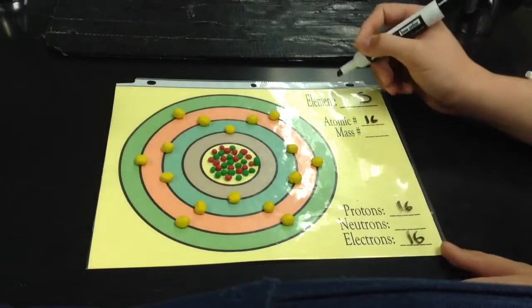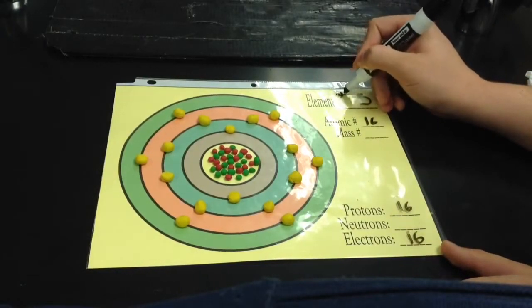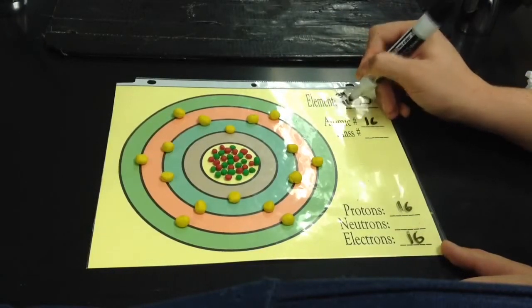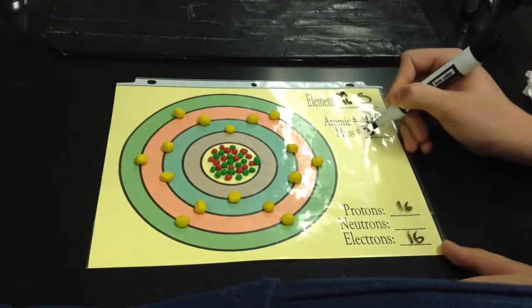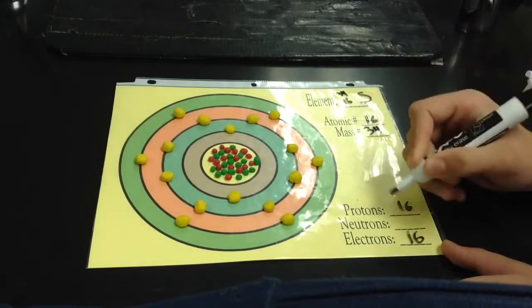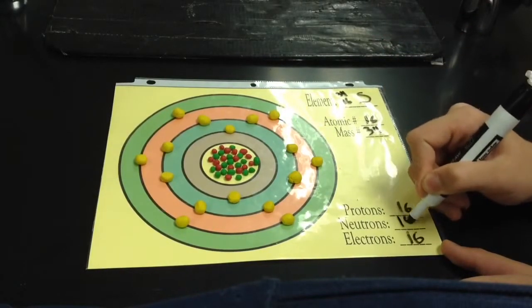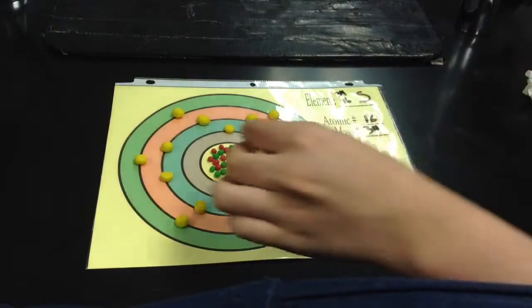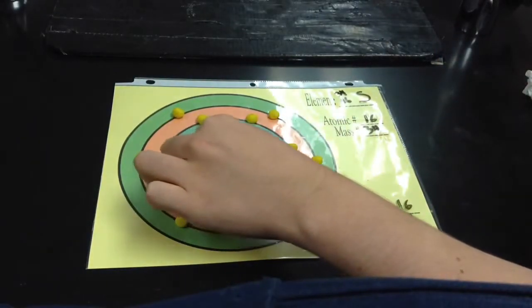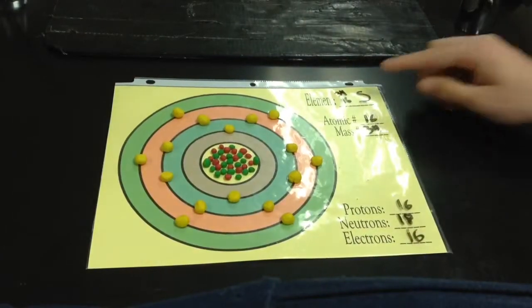This is sulfur-34. It has 16 protons, 18 neutrons, and 16 electrons. It appears more frequently than sulfur-33, at a rate of about 4.21%. It has a mass of 34 atomic mass units.